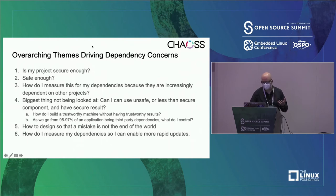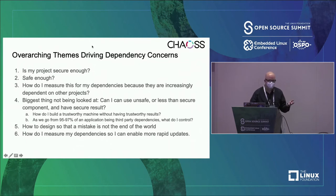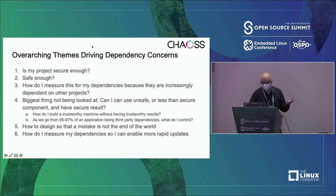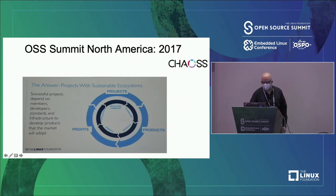My projects are increasingly dependent on other projects. The biggest thing we looked at is: can I use something unsafe or less than a secure component and have a secure result? In other words, how do I build a trustworthy machine without trustworthy results from all the components? As applications go to 90% third-party dependencies, what do I have control over, and how do I design so that a mistake isn't the end of the world?